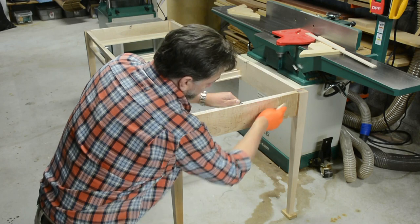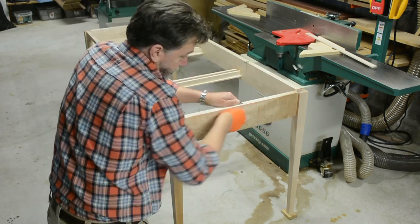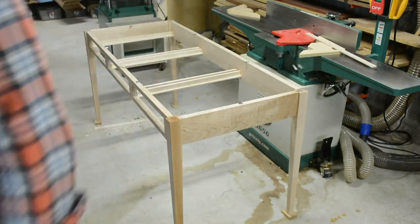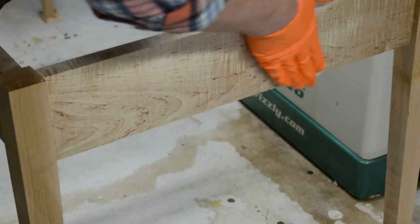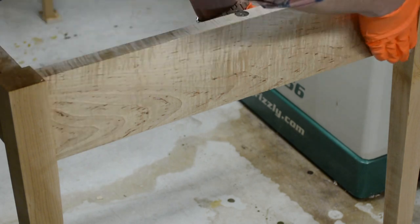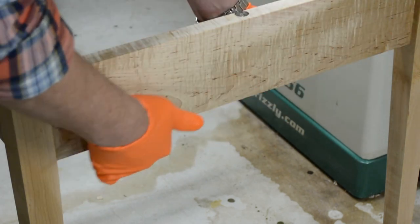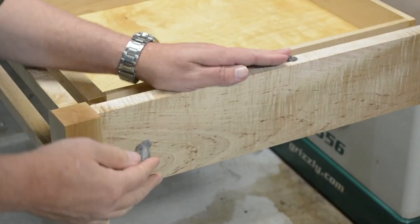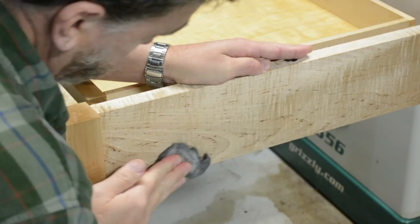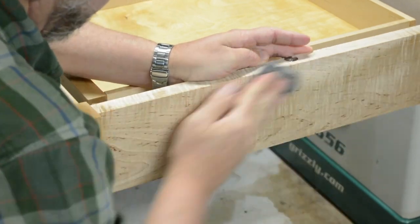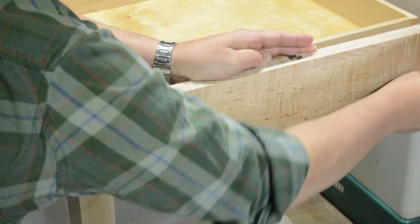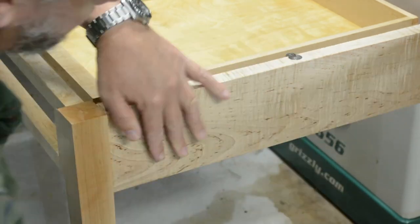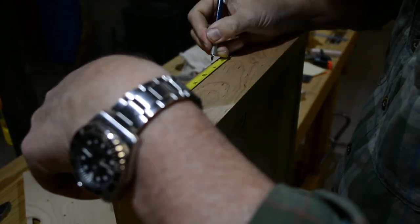This is the first coat looks pretty good, same as what went on the top, it's Osmo. And this is the second coat, it really starts to bring out the figure. After the third coat, the entire piece has gone over with 4-0 steel wool and wool lube to basically smooth it out and get ready for the last coat. After the last coat, you can put the drawer hardware on.